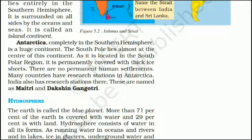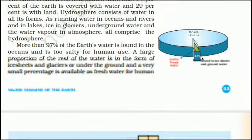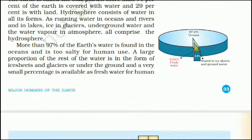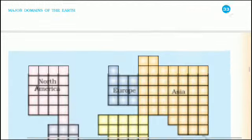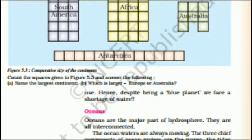Hydrosphere: The earth is called the blue planet. More than 71% of the earth is covered with water and 29% is with land. Hydrosphere consists of water in all its forms — running water in oceans, rivers and lakes, ice and glaciers, underground water, and water vapor in the atmosphere. More than 97% of the earth's water is found in the oceans and is too salty for human use. A very small percentage is available as fresh water. Hence, despite being a blue planet, we face a shortage of water.